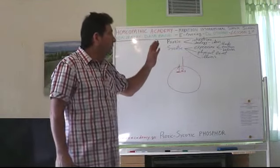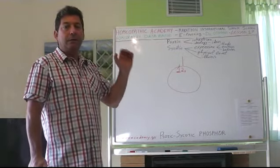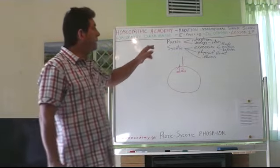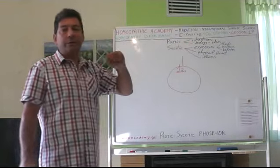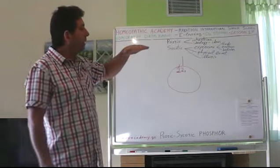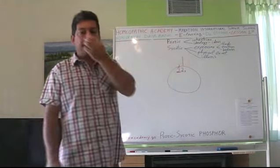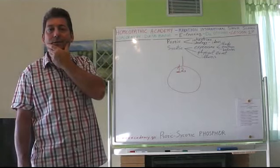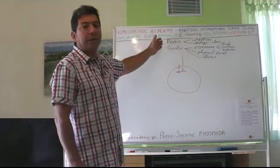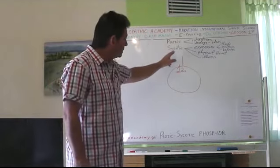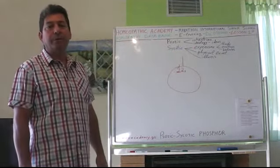What defines his dominant miasmatic influence is the intention and ideology, because hierarchically it is higher than the other levels. So he is predominantly psoric in general, but he has this psychotic expression and influence on the body. It is a combination that we will also find in a very relevant constitution — in Pulsatilla.